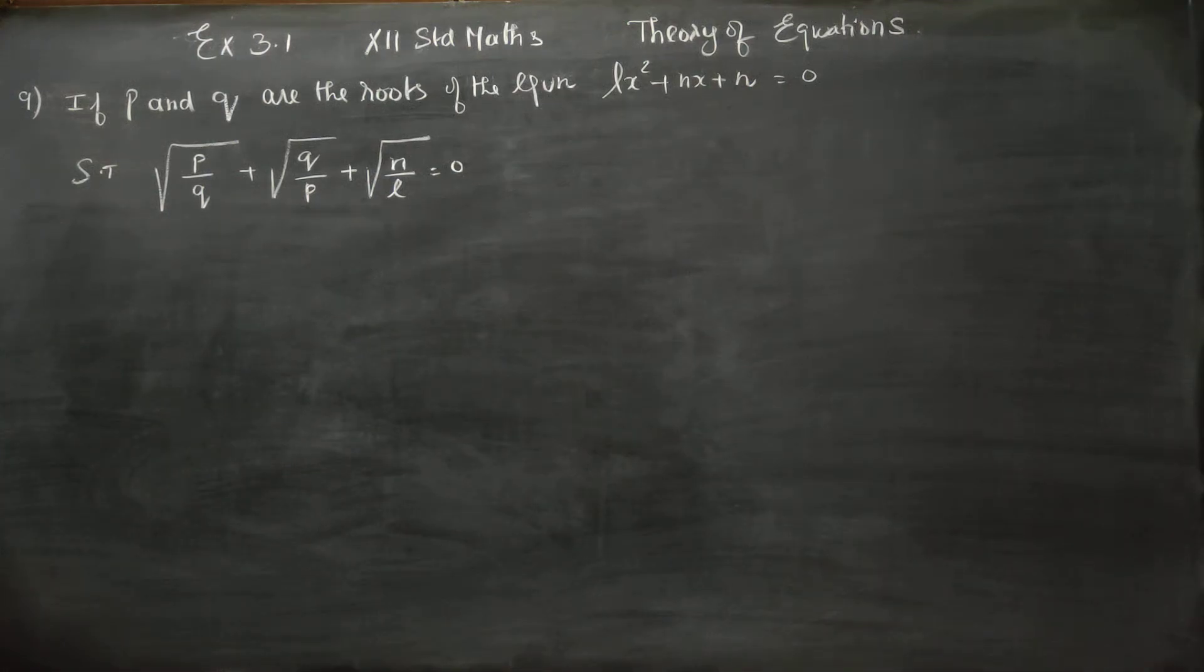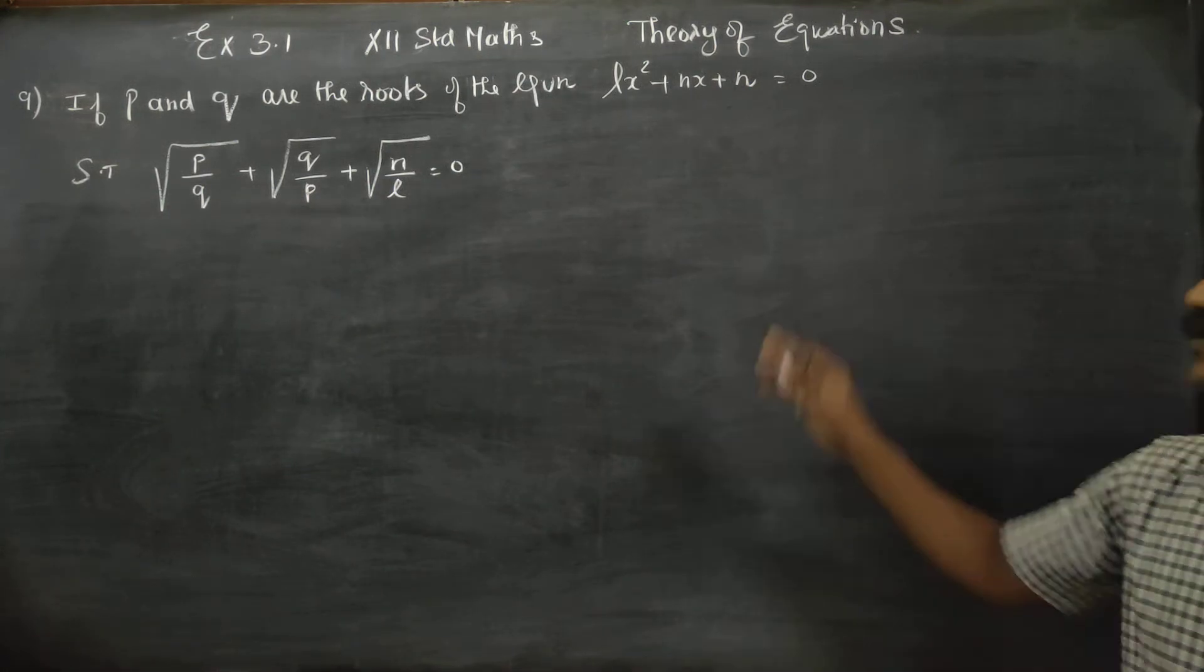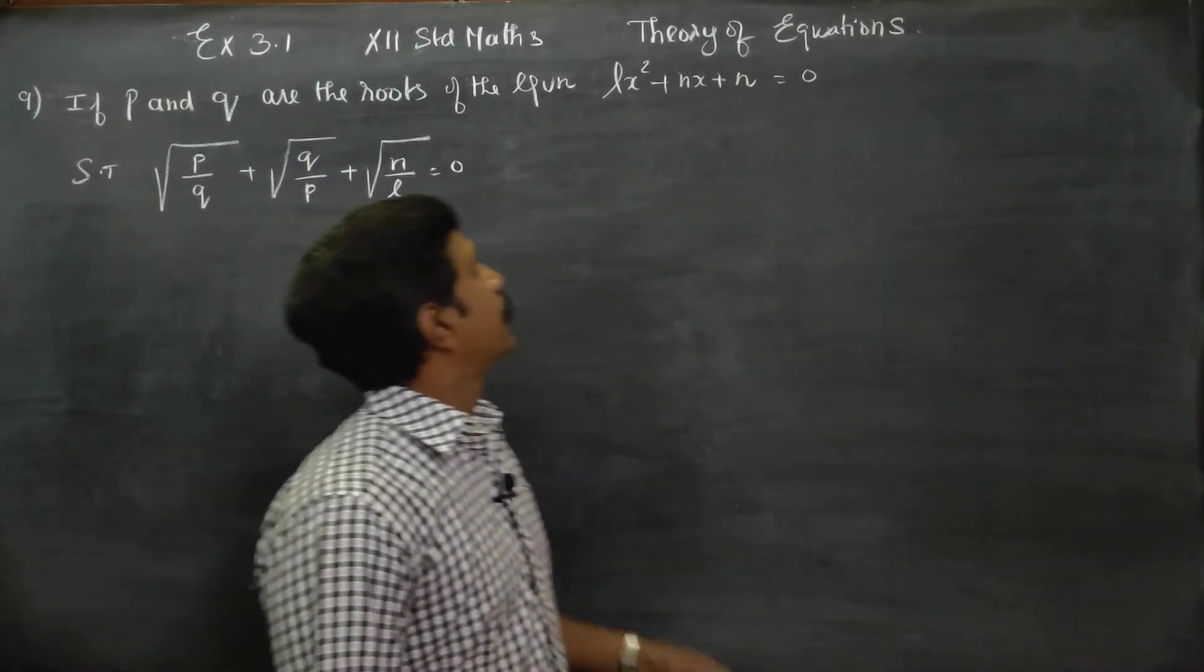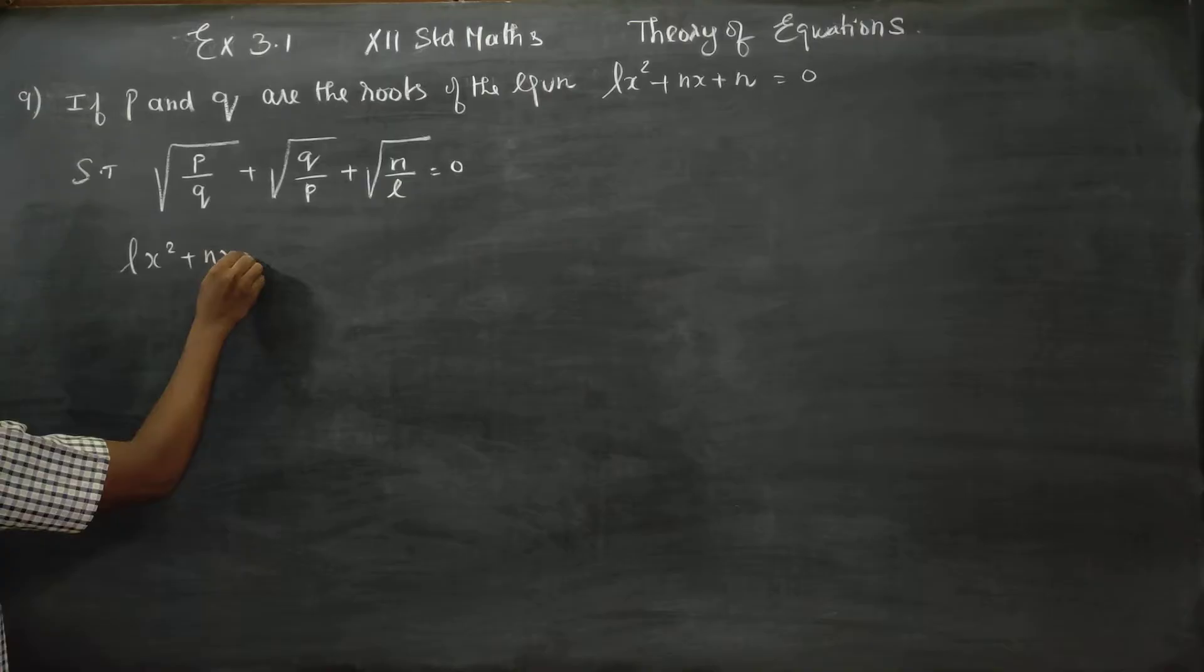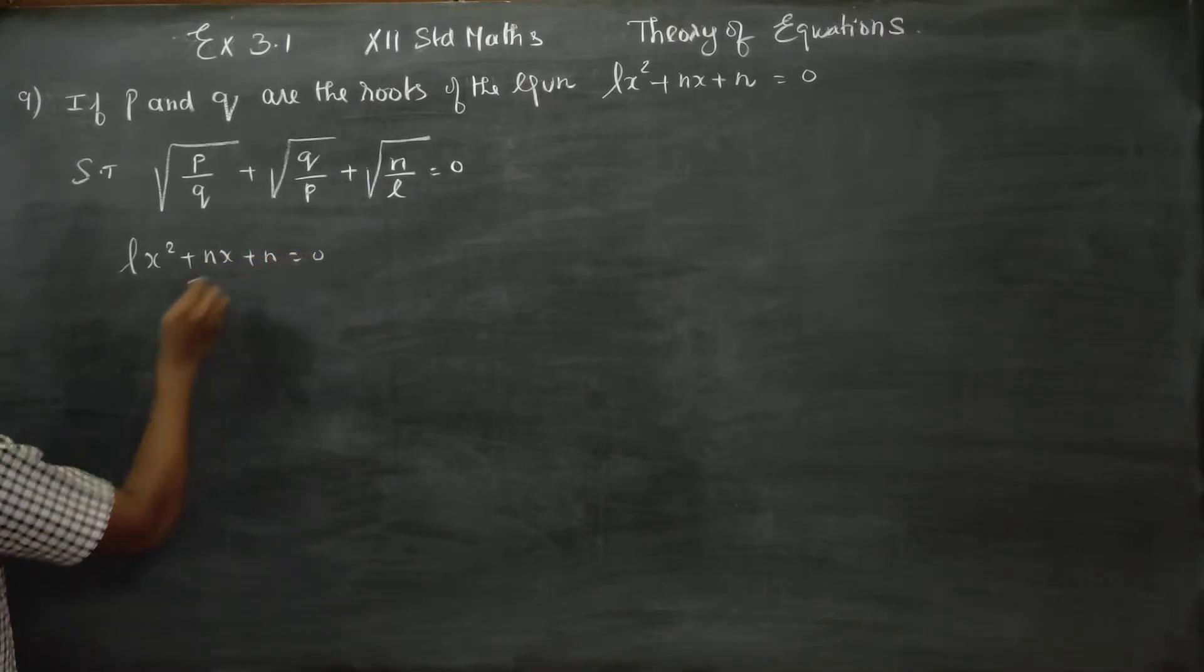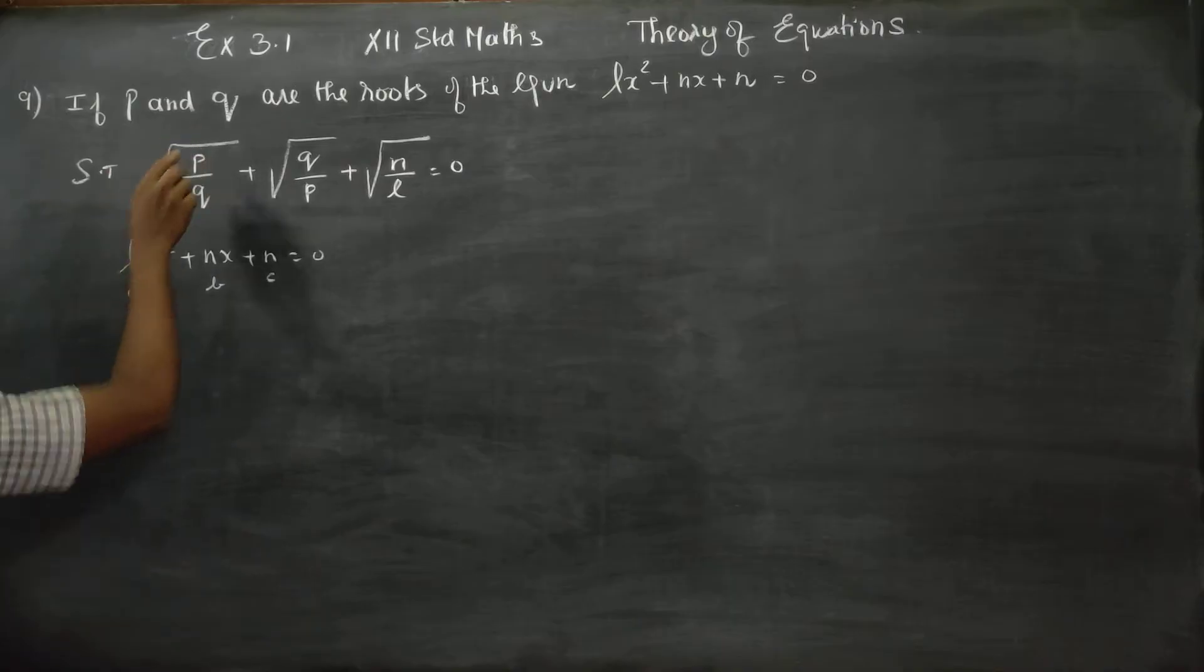Hello to all standard students. If P and Q are the roots of the equation LX square plus NX plus N equals 0, show that. My equation is LX square plus NX plus N equal to 0, and P and Q are the roots.